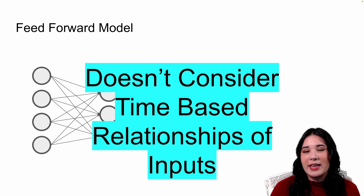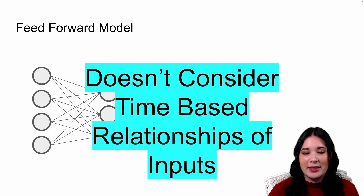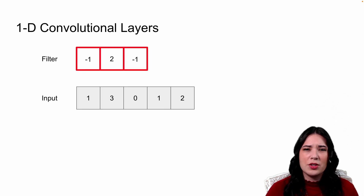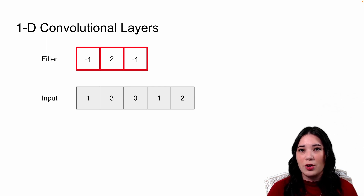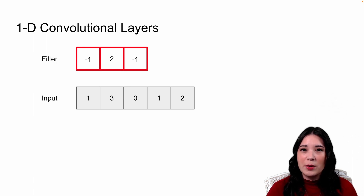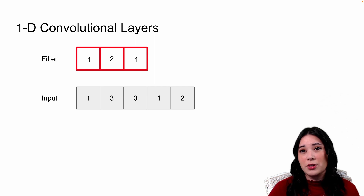If we have sequential data, say the price of a stock over time, we know there are meaningful time-based relationships — the price of a stock yesterday tells us a lot about what the price might be today. So we want to take into account these sequential relationships. Why not use convolutional layers? Actually, we can. We've been using 2D convolutional filters for images, but there's nothing stopping us from using one-dimensional convolutional layers to process a sequence. We take filters and apply them to input, but instead of 2D filters and 2D input, we now have 1D filters and 1D input.